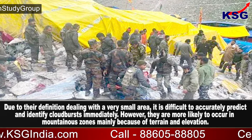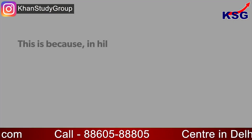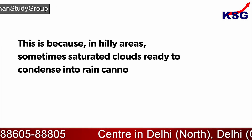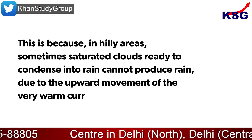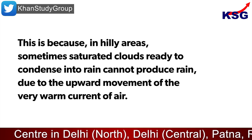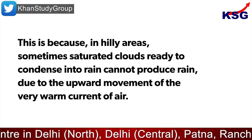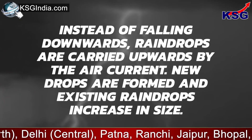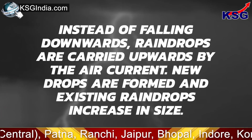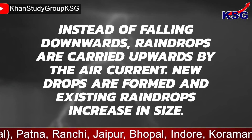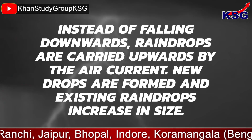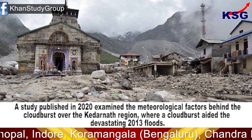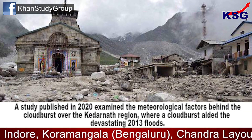In hilly areas, saturated clouds ready to condense into rain sometimes cannot produce rain due to the upward movement of a very warm current of air. Instead of falling downwards, raindrops are carried upwards by the air current. New drops are formed and existing raindrops increase in size.